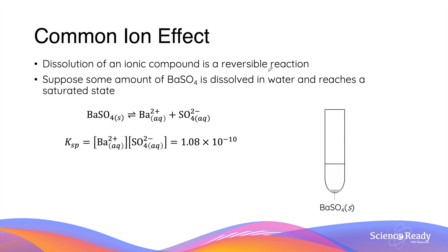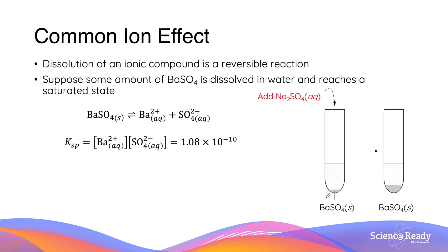As an example, suppose we have a test tube containing a saturated solution of barium sulfate. Because the solution is saturated, some amount of precipitate has already formed, as you can see at the bottom of the test tube. Now if some amount of sodium sulfate is added, the amount of precipitate is increased. It is important to recognize that the additional precipitate is not sodium sulfate, because sodium-containing compounds are always very soluble, so they usually do not produce precipitates.